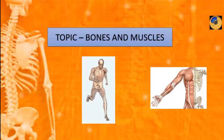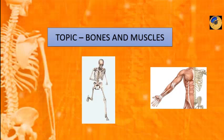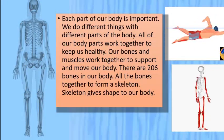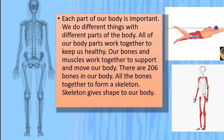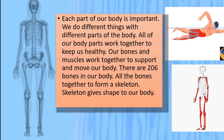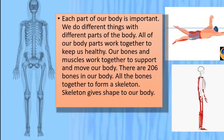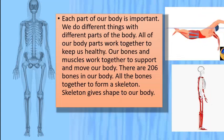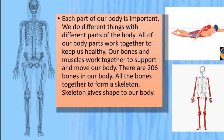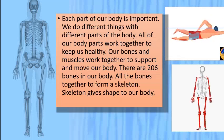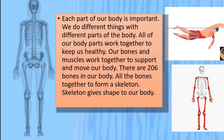Bones and muscles work together, and all of our body parts work together to keep us healthy. Our bones and muscles work together to support and move our body. There are 206 bones in our body. All the bones together form a skeleton, and the skeleton gives shape to our body.